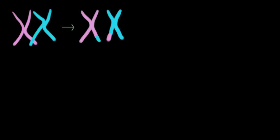Let's take a closer look at different ways in which crossing over, or genetic recombination, can happen. Here we have our homologous pair of chromosomes again that are crossing over, and we get something that looks like that. This is called a single crossover.